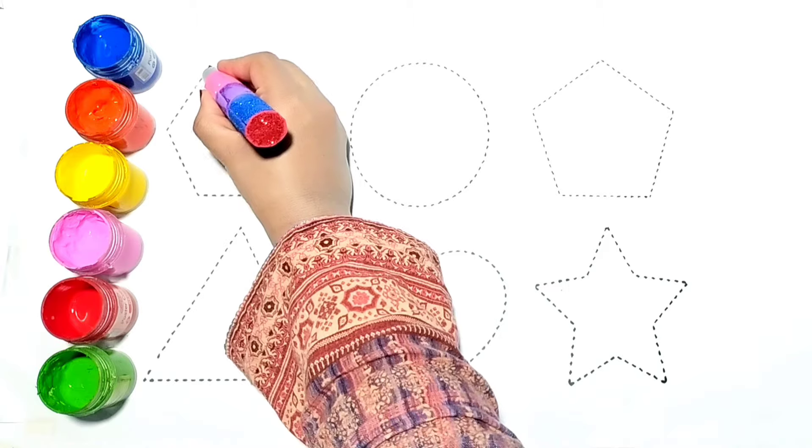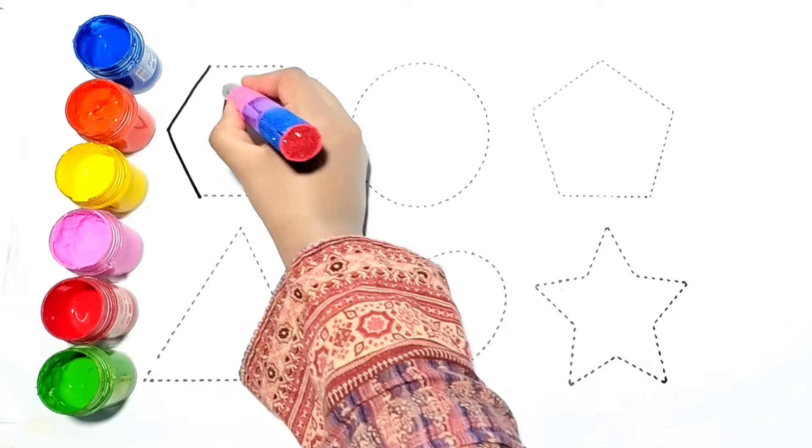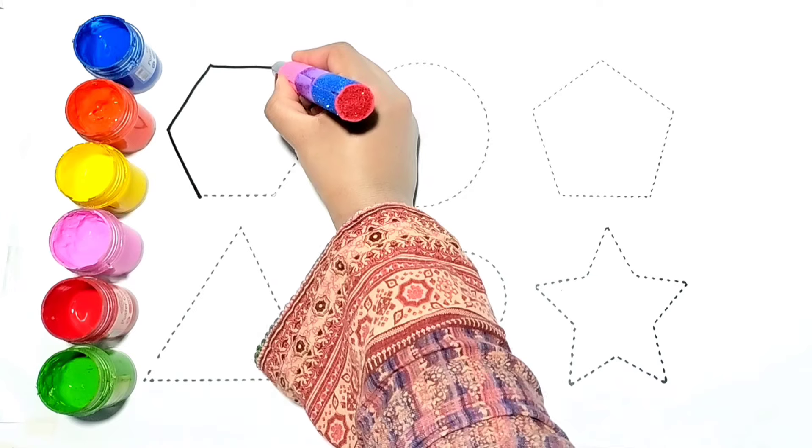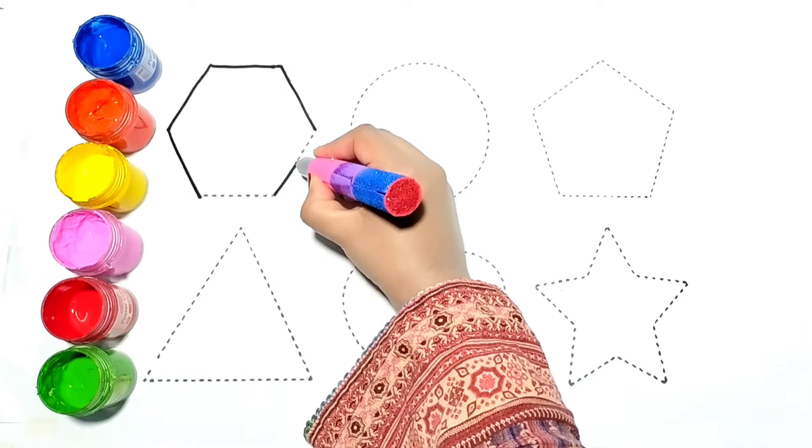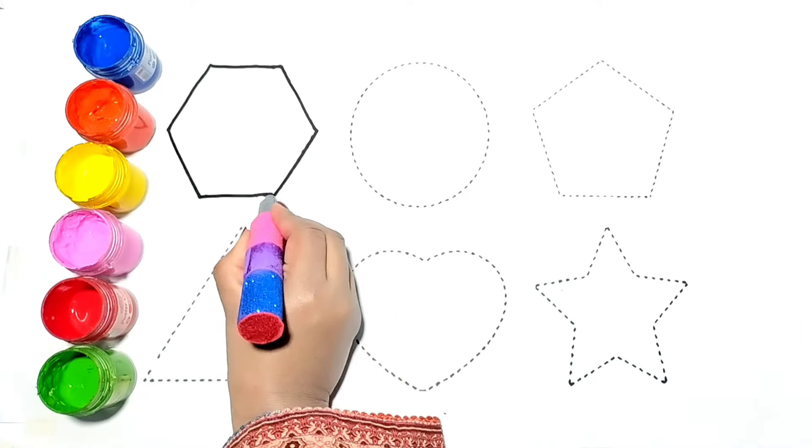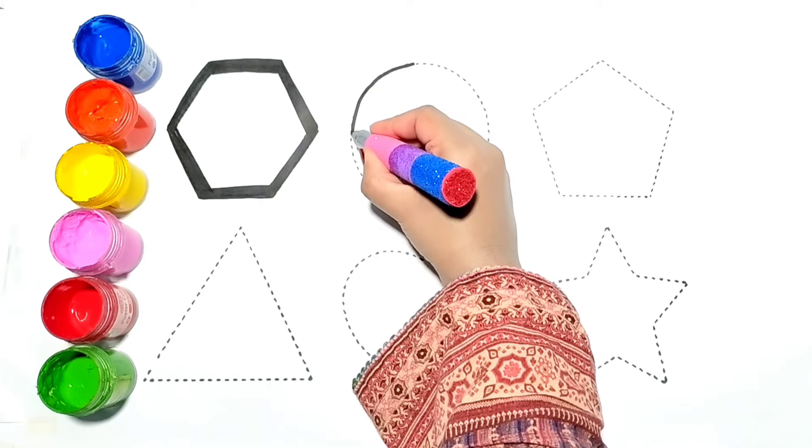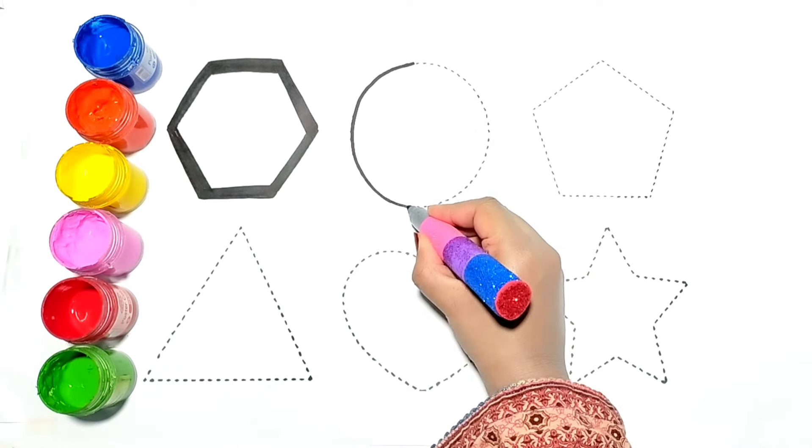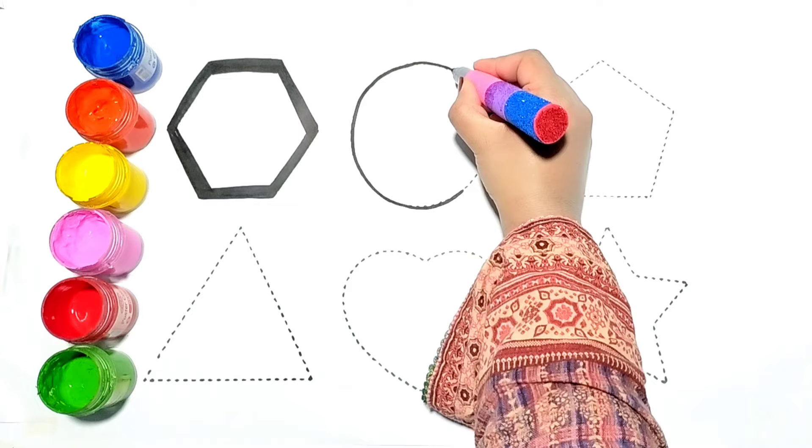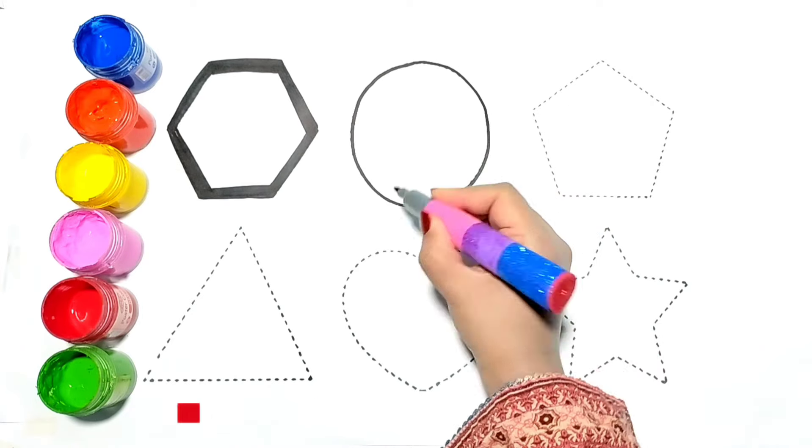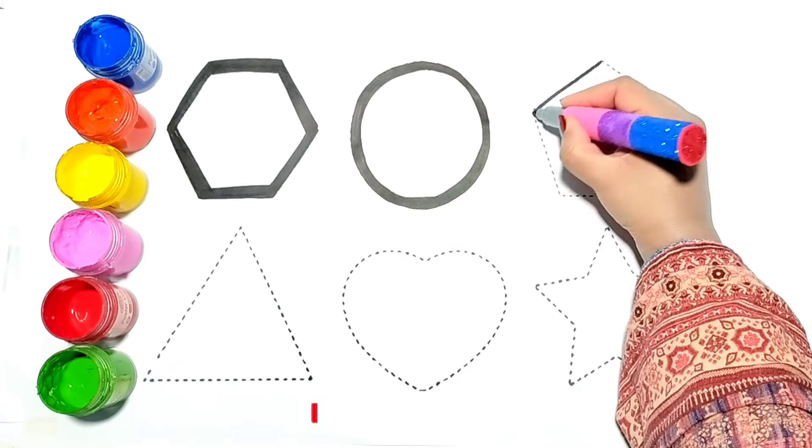First I am tracing hexagon. Now I am tracing circle. Let's draw pentagon here.